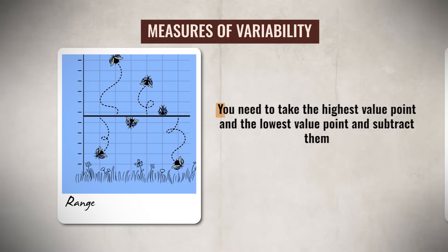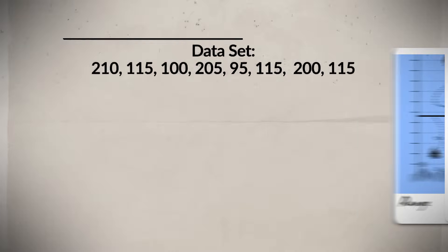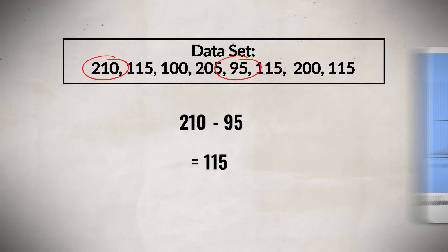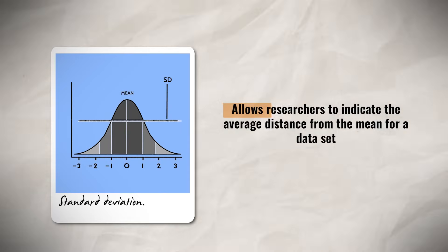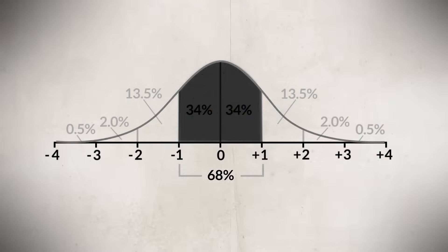To calculate the range, you need to take the highest value point and the lowest value point and subtract them. Range is just the difference between the two points. For example, if we go back to our original set of data, the highest value is 210 and the lowest is 95. So our range is 115. Standard deviation, on the other hand, allows researchers to indicate the average distance from the mean for a dataset. For AP Psychology, you don't have to worry about having to calculate the standard deviation.